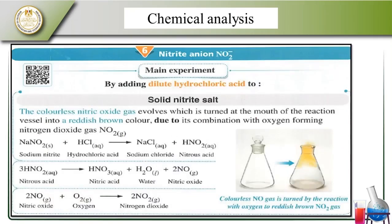Let's look at the nitrite group. At the mouth of the reaction tube, a reddish-brown color appears — this is nitrogen dioxide formed by combination with oxygen. Sodium nitrite with hydrochloric acid gives sodium chloride and nitrous acid. Nitrous acid gives nitric acid, water, plus nitrogen dioxide. Nitric oxide with oxygen gives nitrogen dioxide.